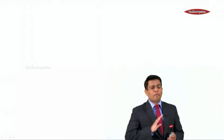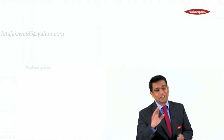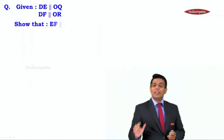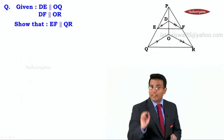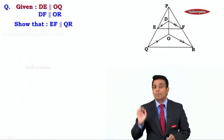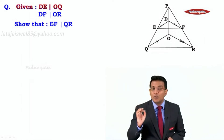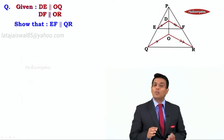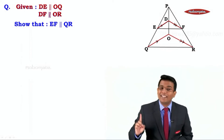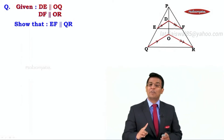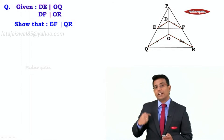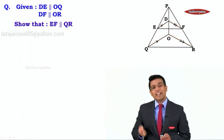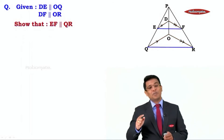This is an important and interesting problem — I want you to solve it on your own. Here, we have a particular figure given with the information that DE is parallel to OQ. The next information is DF is parallel to OR, and we are supposed to prove that EF is parallel to QR.